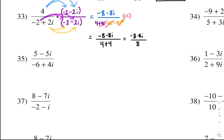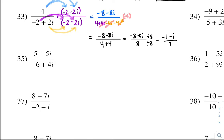Now this is something you can simplify. Notice there's a negative 8, a negative 8i, and an 8 — you can divide top and bottom by 8. So negative 8 divided by 8 is negative 1, and negative 8i divided by 8 is negative i, all over 1. Anything over 1 is just that, so the answer is negative 1 minus i.